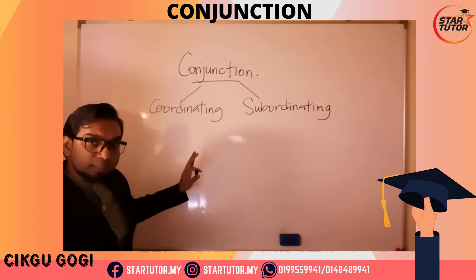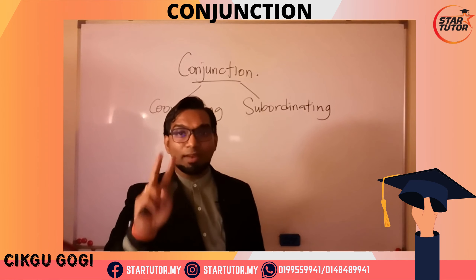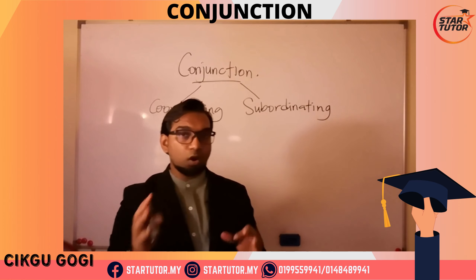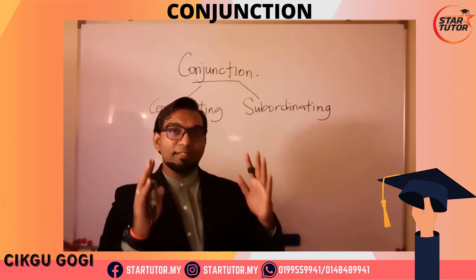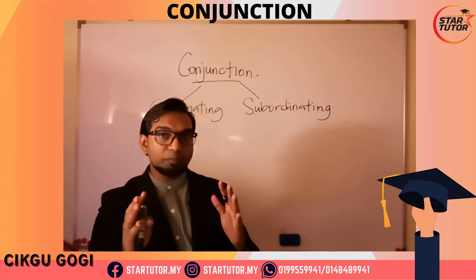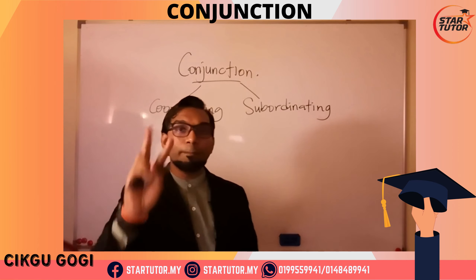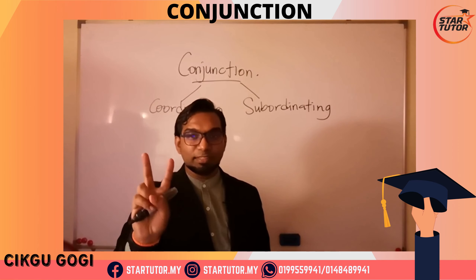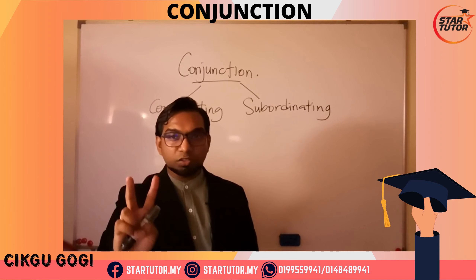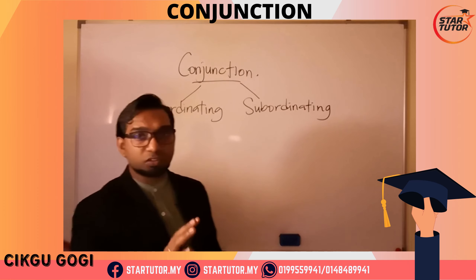For coordinating conjunctions, we use them to combine two independent clauses. What are independent clauses? An independent clause is a clause that can stand by itself — it's a complete sentence. So we use coordinating conjunctions to combine two complete, independent sentences. Before we look at examples, let's look at what words we consider coordinating conjunctions.